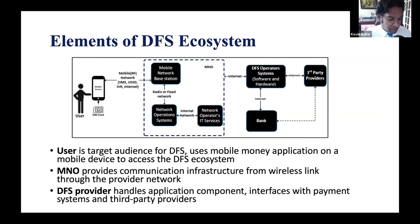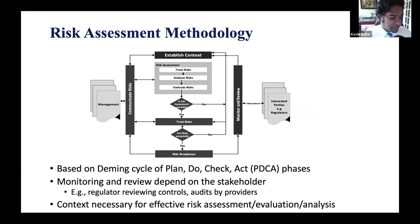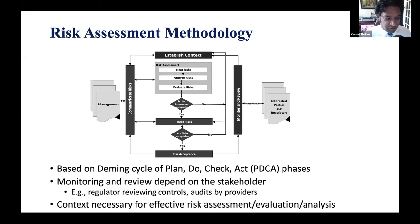The way that we assess risk is based on the Deming cycle of Plan, Do, Check, and Act — the PDCA phases. This idea of a feedback loop is essential when dealing with security resilience. The goal of our methodology is to monitor and review depending on the stakeholder. For example, a regulator may review the controls as well as the audits provided by the DFS provider, and based on that information, changes can be made accordingly. Every system is different, so individual context is necessary for effective risk assessment, evaluation, and analysis, but having a standardized framework allows for individualization that can be used for any particular context.